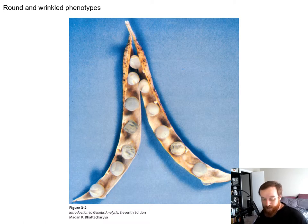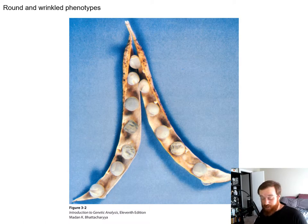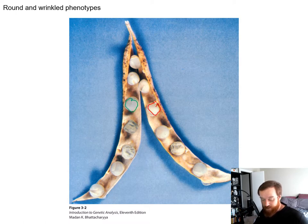In this picture, we have a pea pod that is opened up. The colors may be a little distorted, but there are two different genes controlling two different traits. We have yellow peas and green peas, and then we have smooth peas and wrinkled peas. Those are the two traits we'll focus on in this first example.